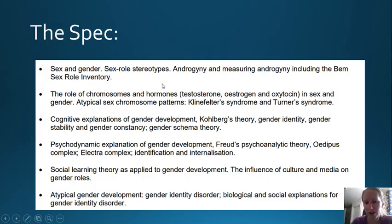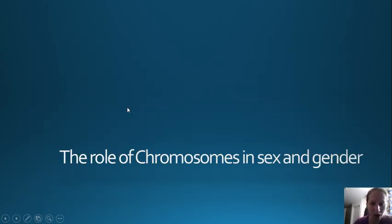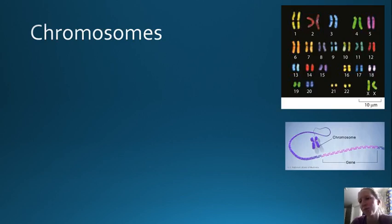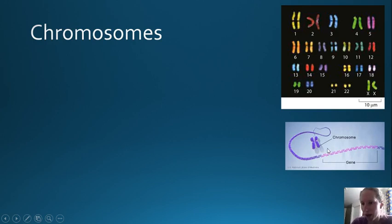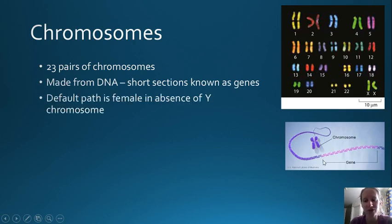This is gender for AQA psychology. In this video we're going to look at the role of chromosomes in sex and gender, and also atypical sex chromosome patterns. First of all, the role of chromosomes - we have 23 pairs of chromosomes and it's the last pair which determines our biological sex. Our chromosomes are made up of DNA, and short sections of that are what are known as our genes, which determine many important functions in our body.